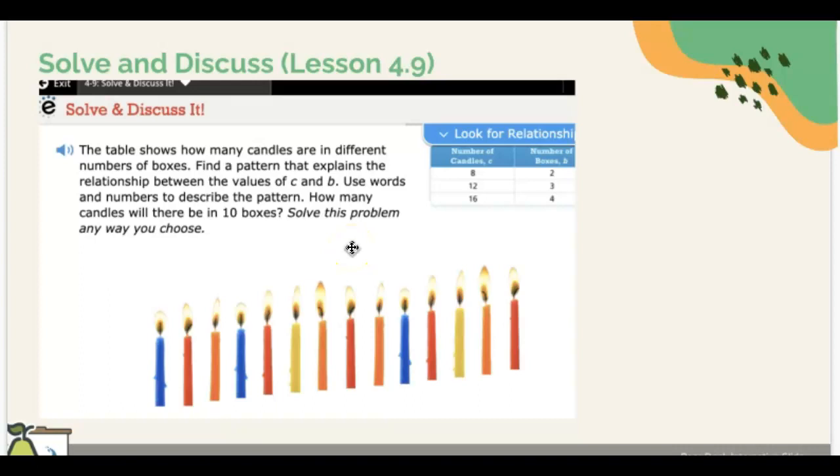Let's check what answers you have. Here's the table: number of candles will be 8 if there are 2 boxes. If there are 3 boxes, there will be 12 candles. If there are 4 boxes, there will be 16 candles.